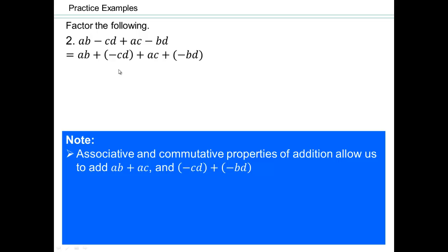So first, associative property of addition allows us to add negative cd and ac. And then we can switch the ac and the negative cd by commutative property of addition. And so that's why we can add ab and ac together and negative cd and negative bd together.